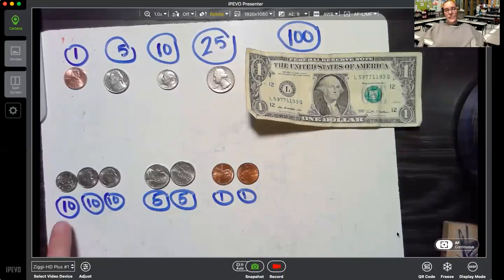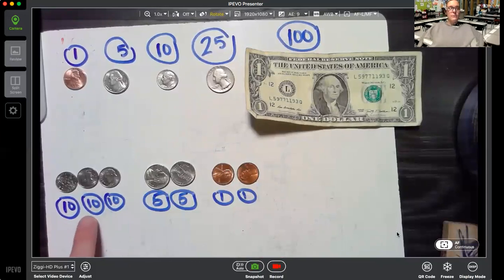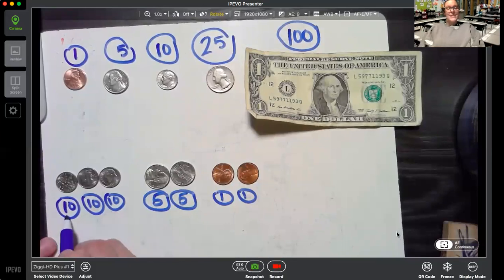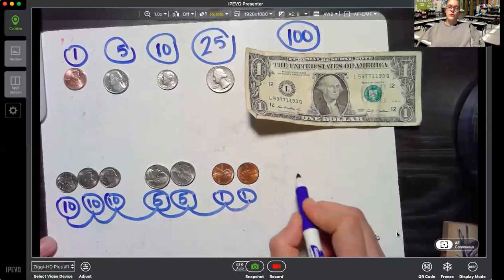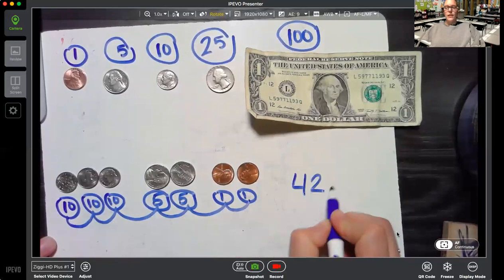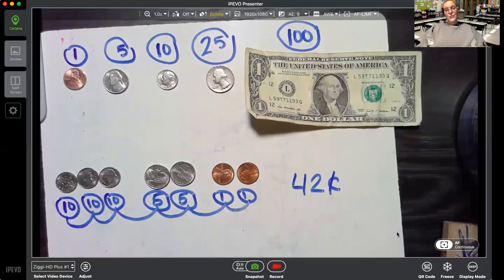Now, when we start counting this time, we're going to start counting at ten. We're going to count by tens a couple times. Then we're going to count by fives. Then we're going to count on by ones. It's going to look and sound something like this. Ten, twenty, thirty, thirty-five, forty, forty-one, forty-two. So just by sitting on the couch and reaching your hand around, you found forty-two cents.